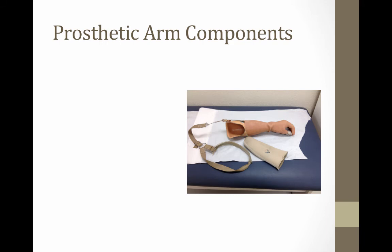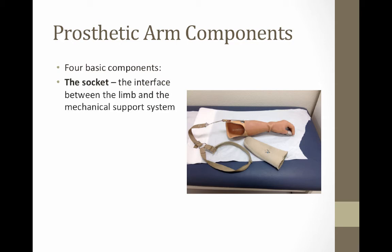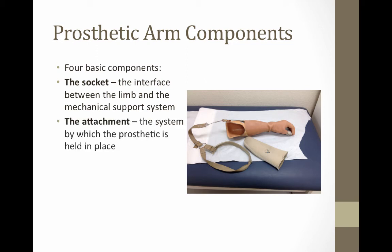Let's talk about the components that go into a prosthetic arm, since that's what you'll be designing and you'll need to design a method for each of these components. There are four basic components to the prosthetic arm. The first is the socket — this is how the artificial limb interfaces with the portion of the user it attaches to, or the stump, and it's also the support system for the limb. The second is the attachment — this is how the prosthetic limb is held in place and attached to the user.